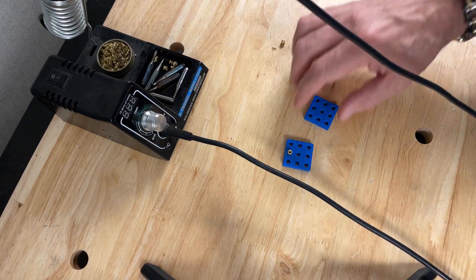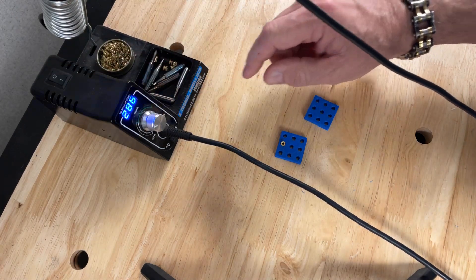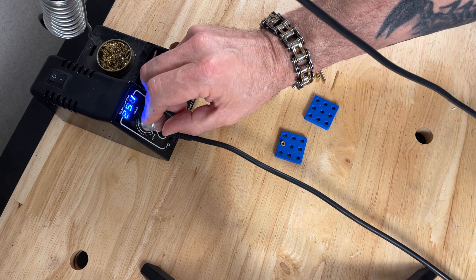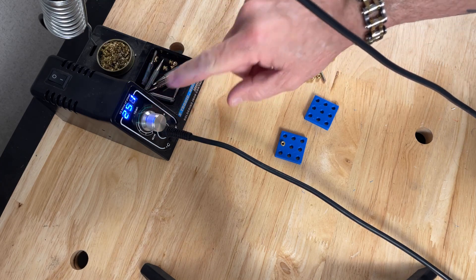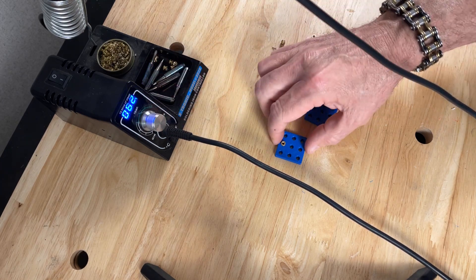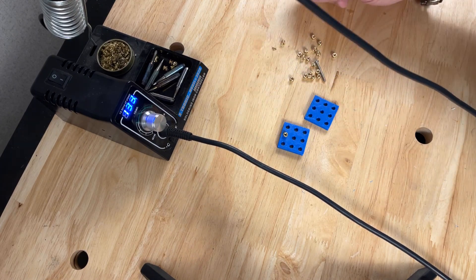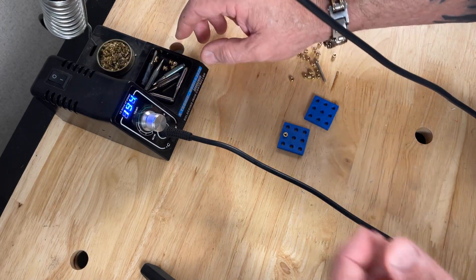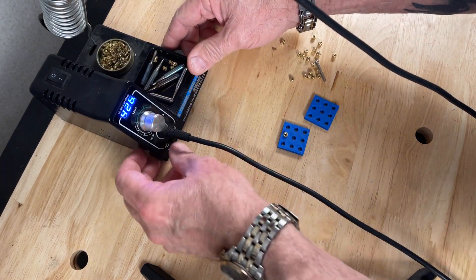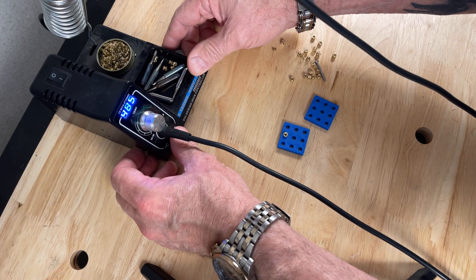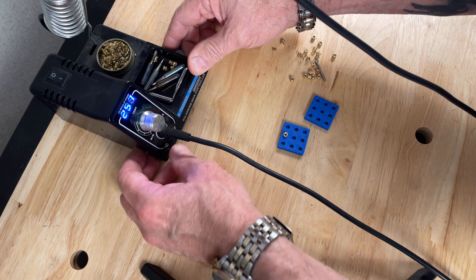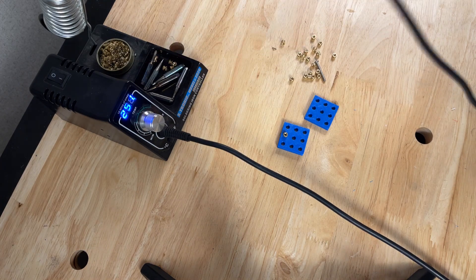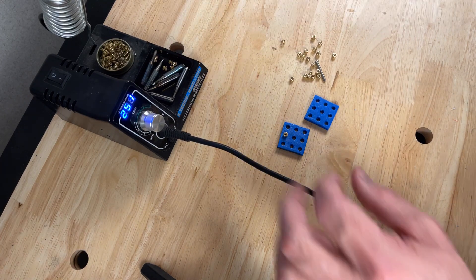Now my soldering iron is adjustable, so typically I run it at about 250 degrees for setting parts into ABS or actually any plastic. 250 degrees works. For freedom units, we'll let it get up to temperature here—that's 485 degrees Fahrenheit, 257 degrees Celsius.